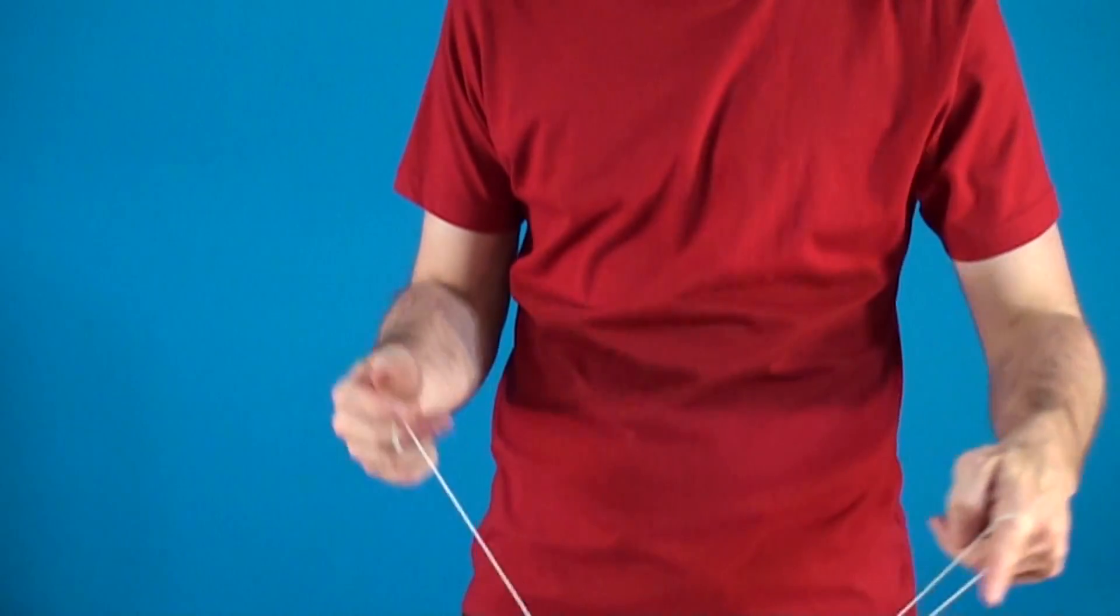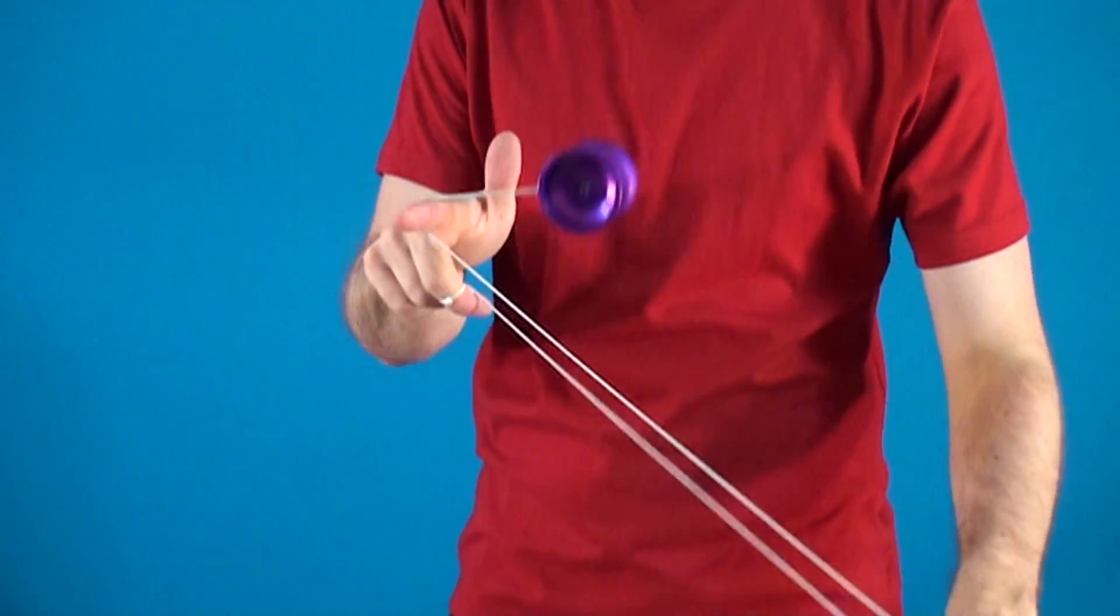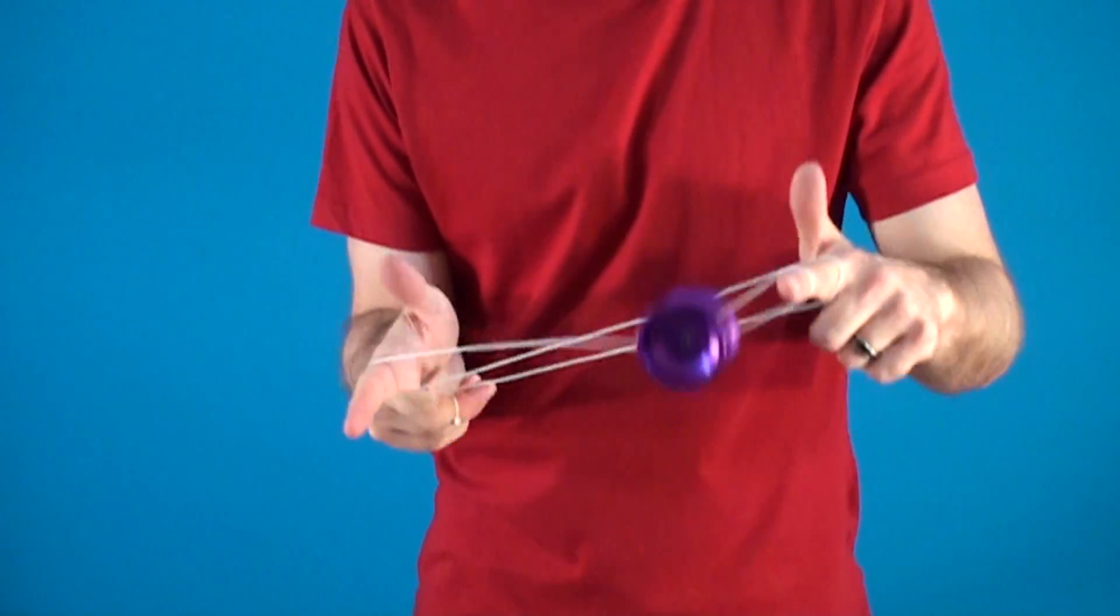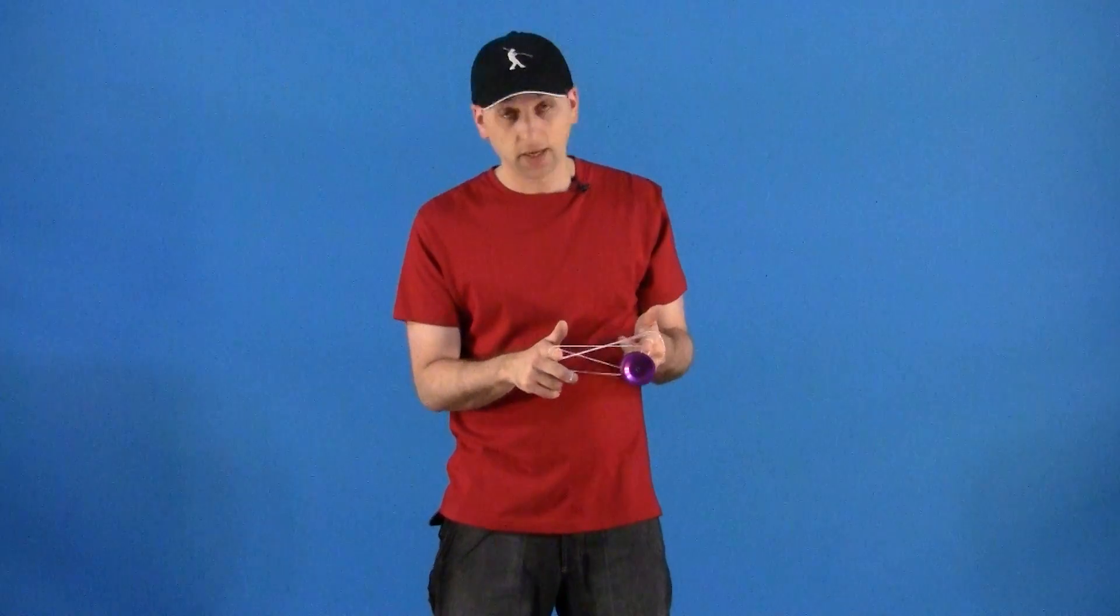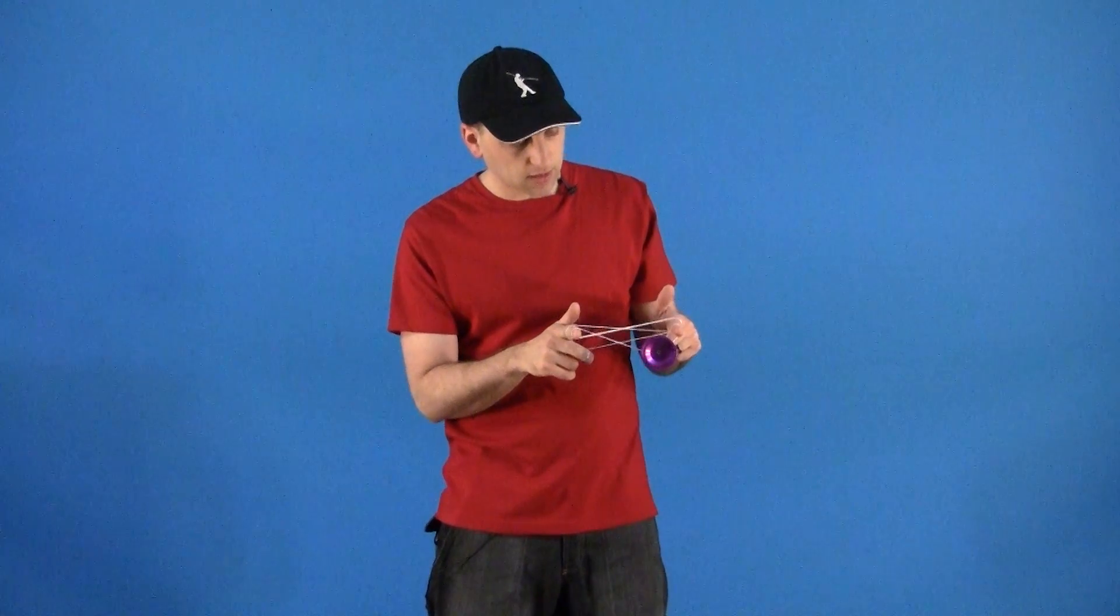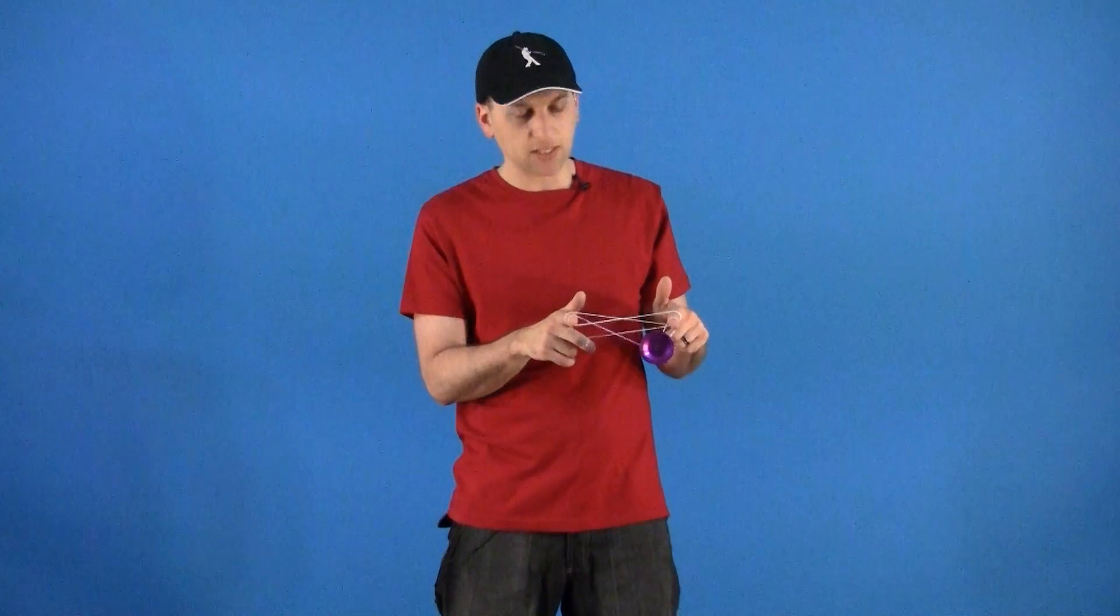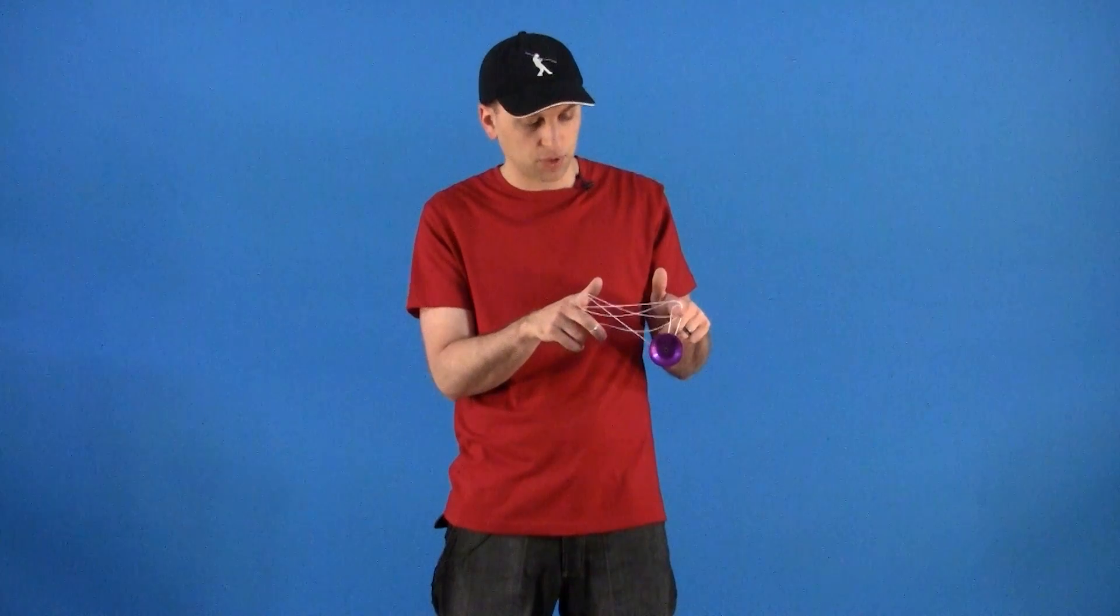For this what you are going to do is hop the yoyo up and then cross your hand past the string, and then kind of hook it and bring it back out and land it again on the outside string. You are going to always try to land it on just the outside string until you get it basically three times out just like you would for your triple or nothing.